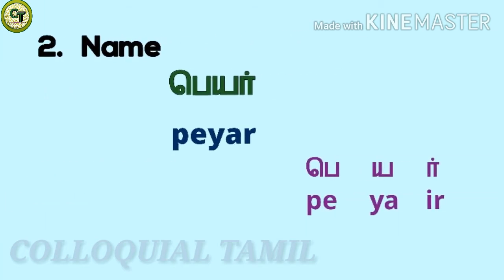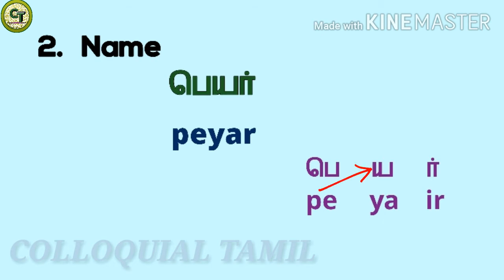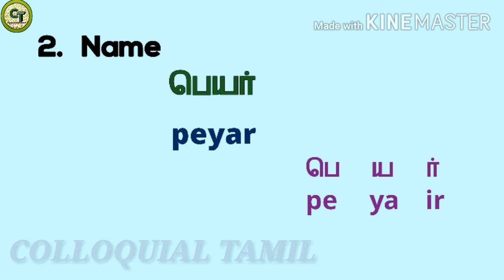'Name' in Tamil is 'pair' — a short zone letter, a short zone letter, a consonant, together: 'pair.' After learning these two words, 'what' and 'name,' can you guess how to say 'what is your name?' Let's see.